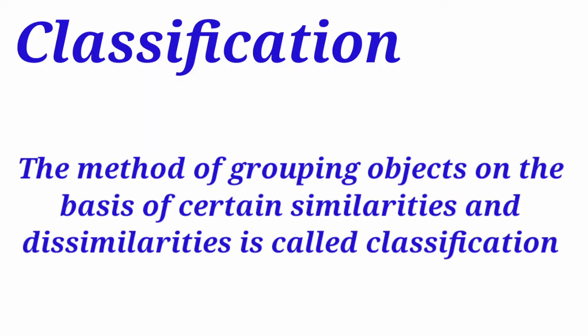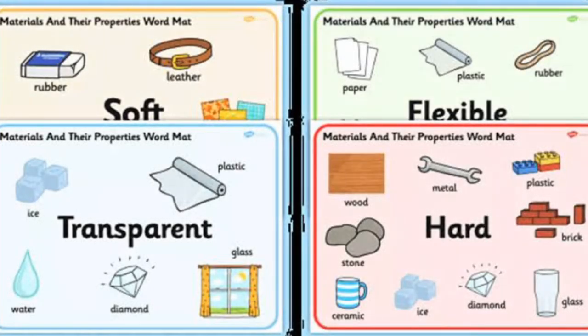What is classification? The method of grouping objects on the basis of certain similarities and dissimilarities is called classification. There are various properties like appearance, hardness, conductivity, solubility, and many more that we will discuss in the next part of this video.